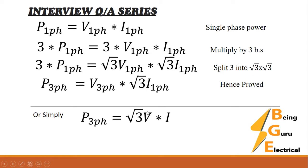This proves our formula, or we can say: three phase power equals √3*V*I, where in this formula, voltage is in terms of three phase voltage, and current is the phase current.